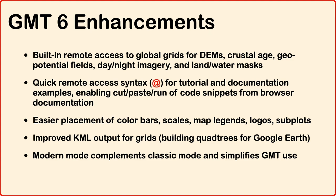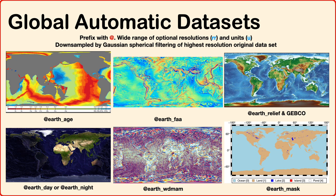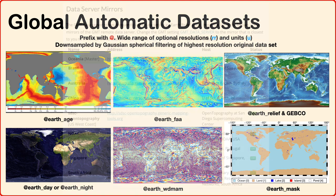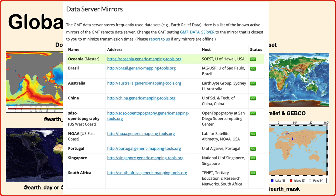Here are some of the automatic global data sets: Earth dates, Earth ages from the EarthByte group, free-air and vertical gravity gradient from Sandwell, topography from a variety of sources, NASA imagery, magnetic field, and so on. These are high resolution but also downsampled to lower resolutions using spherical filtering, so when you need a specific resolution you can get it. You can have GMT decide what resolution is sensible for the plot you're making. These data sets live on GMT servers around the planet — a massive server in Hawaii with replicas around the world. If you want to shorten download times, you can help set up a server near you.